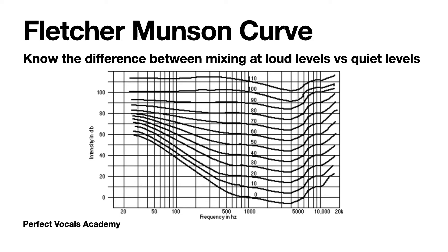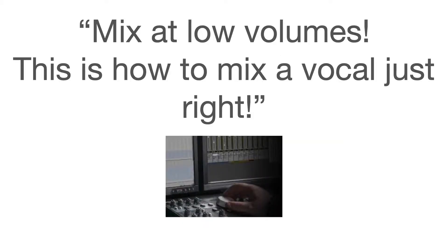The Fletcher-Munson curve is basically how human hearing works. When we are cranking up the music really loud, the low end and the high end is hyped up and loud, whereas the mid-range gets sucked out and lessens. When mixing at low volumes, the mid-range frequencies are going to pop out — this is why a lot of guys say mix at low volume to check the mid-range on the vocals and make sure it's sitting right.